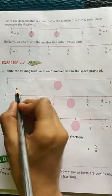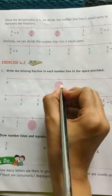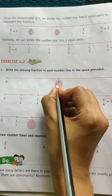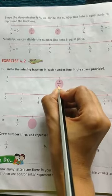So after 0, which number will come? One. And as two equal parts are there, it's 1 upon 2. So the missing fraction is 1 upon 2.